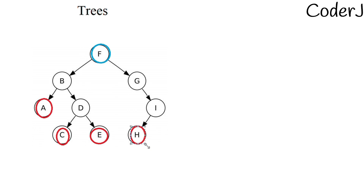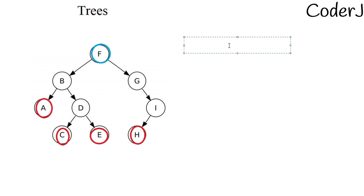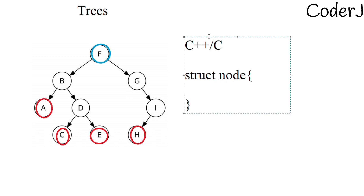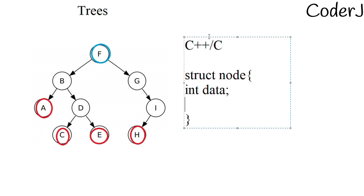Now, how are we going to form this data structure in code? I'll show you in all three languages since I don't know which one you're most comfortable with — C++, Java, or Python. For C++ or C, I'll be using a data structure known as struct, which allows us to incorporate different data types in a single structure. We'll have an int data field — it can be a character, string, whatever type of value you want to store.